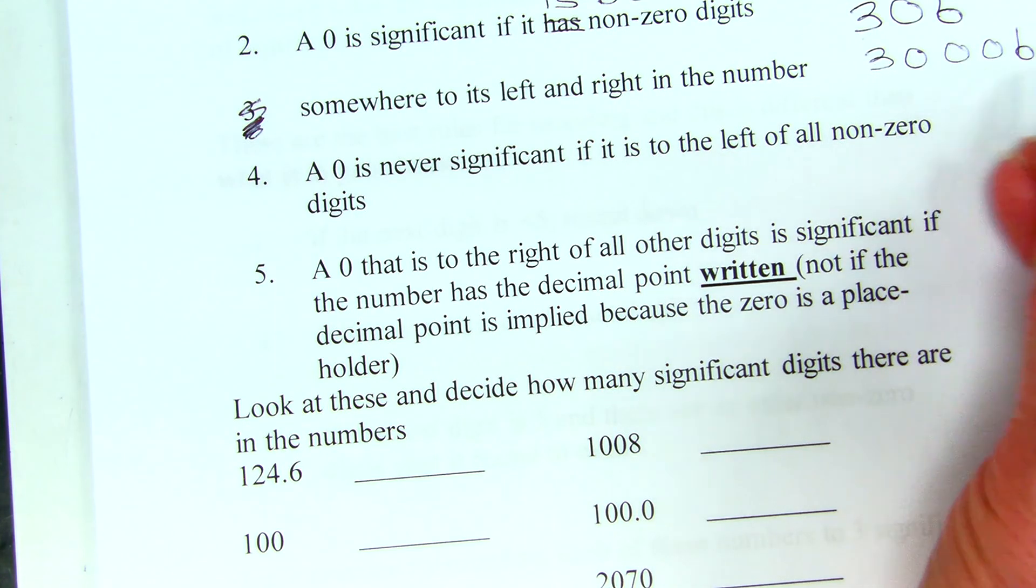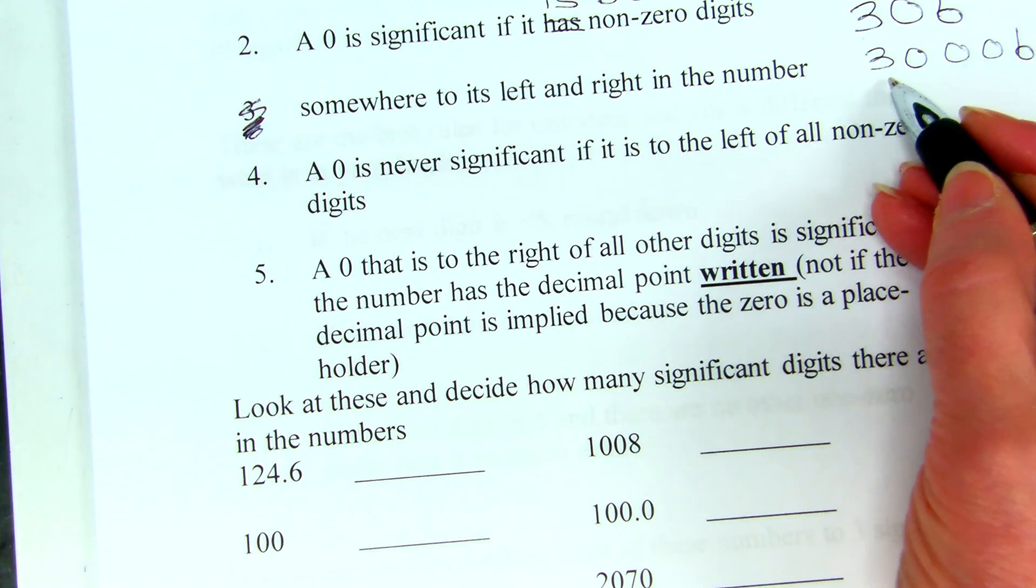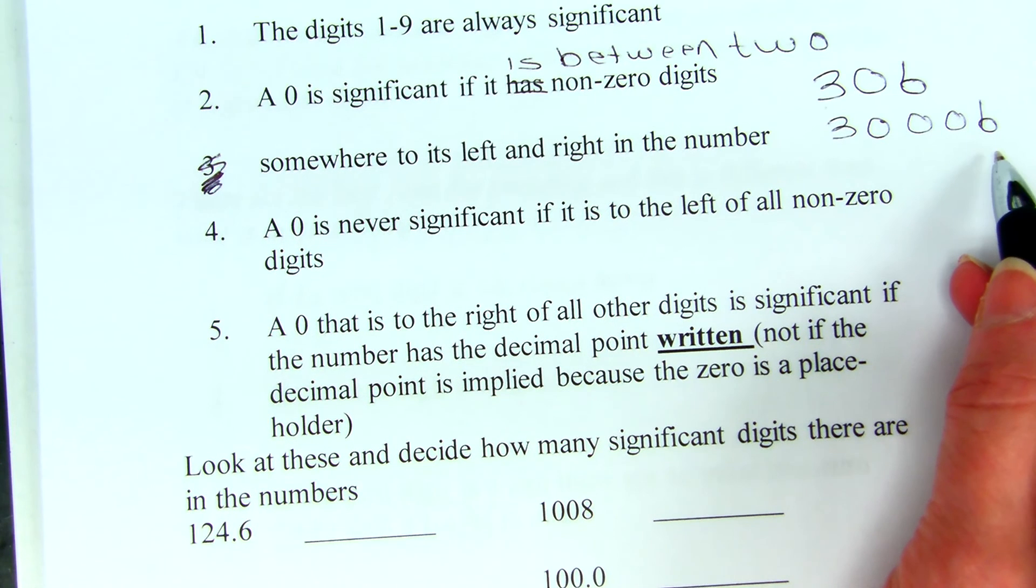Even if you have two of them together if it's like or three of them. If you have 30,006 all of these zeros have a non-zero digit somewhere to the left and somewhere to the right. So, they are significant digits.